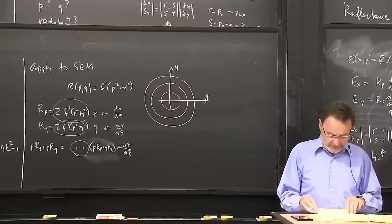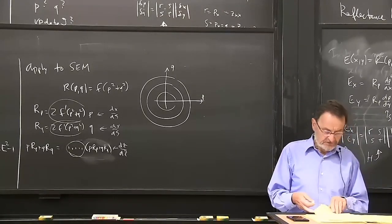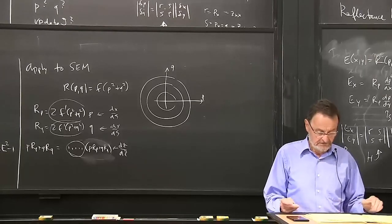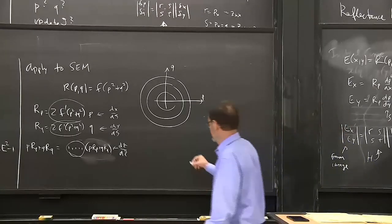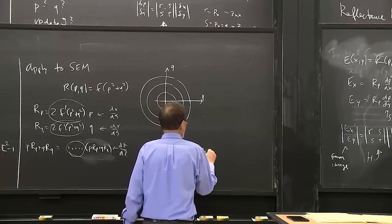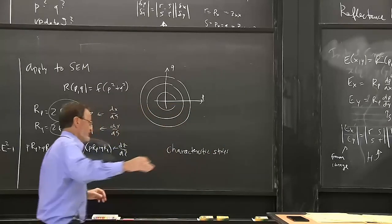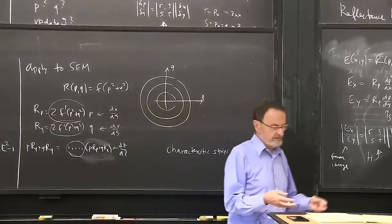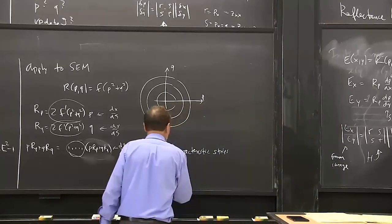You can do the same for Lambertian, though it gets messier because of the square root and the (1 + P² + Q²) term. The key things to remember: we're dealing with characteristic strips — not just exploring along curves, but along each curve we also know the surface orientation. Another related concept is the base characteristic, which is the projection of the characteristic strip into the image plane, giving us the curve traced in the image.